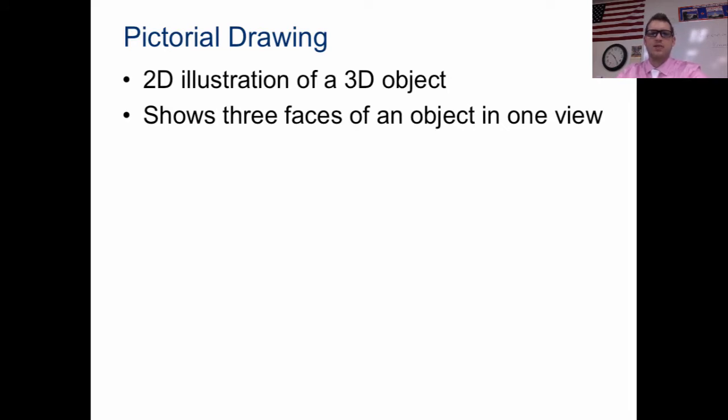What we're going to talk about are different types of drawings. We have 2D illustrations of a 3D object. That's what you're working on. You're going to take a 3D object and find a way of putting it on just a plain piece of paper. So how's that going to work? There are different ways of doing that. One is to show three faces of an object in one view. See three different sides of it.